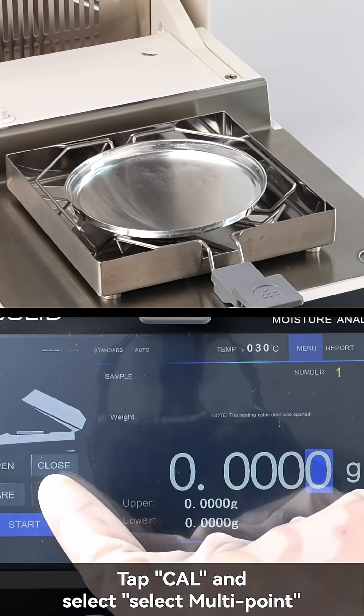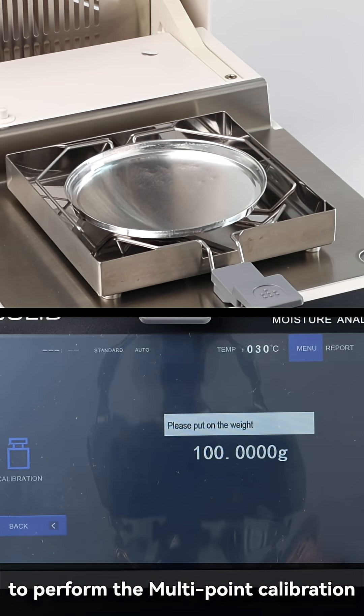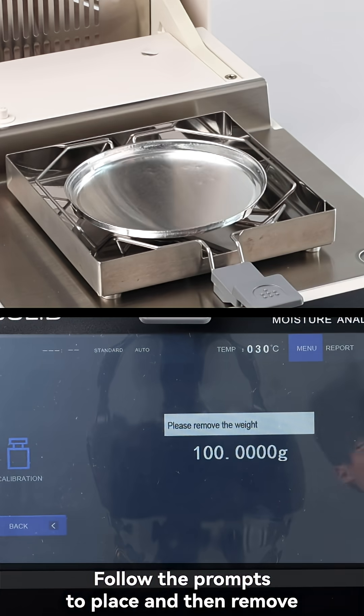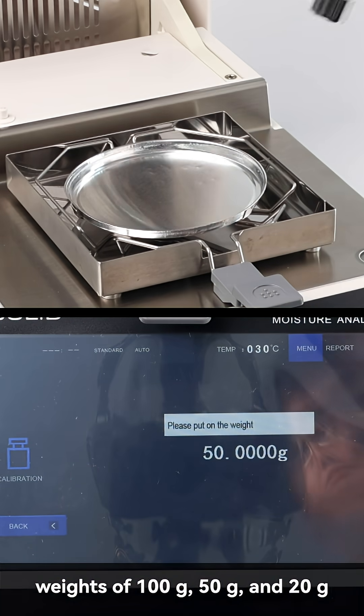Tap calibration and select multipoint to perform the multipoint calibration. Follow the prompts to place and then remove weights of 100 grams, 50 grams, and 20 grams.